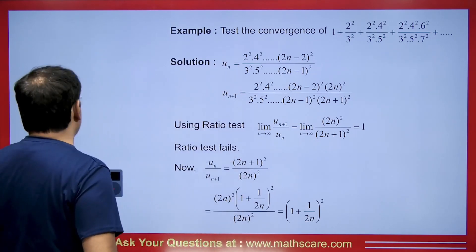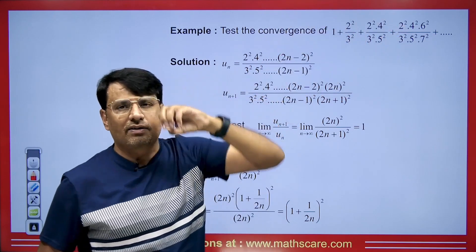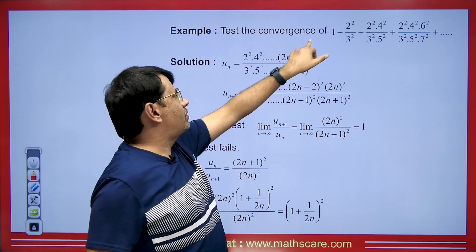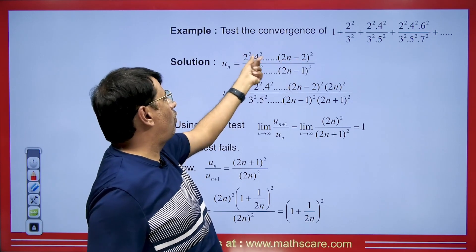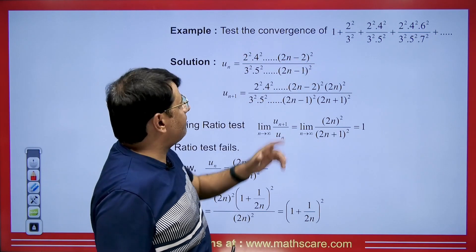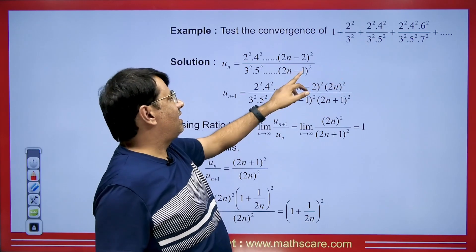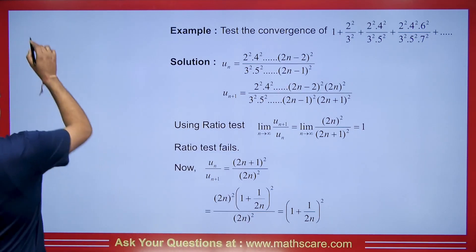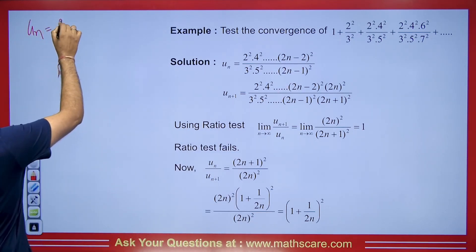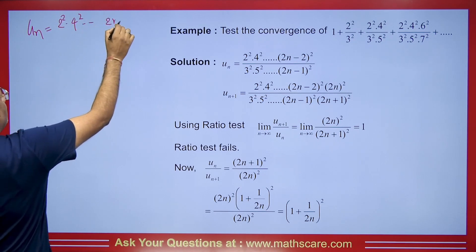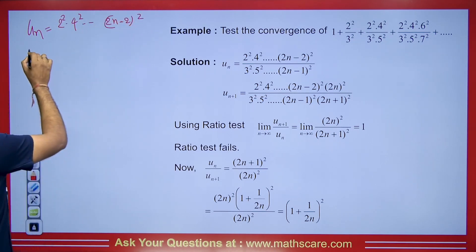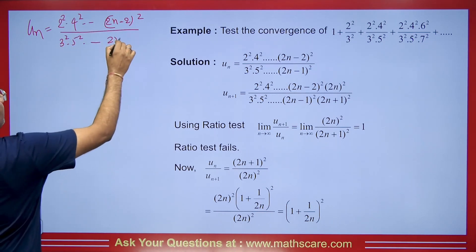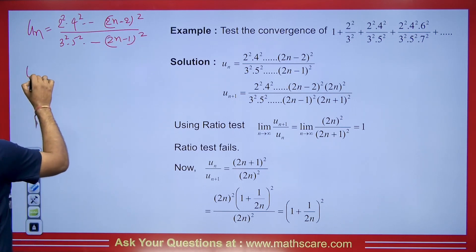Now let's talk about the test for the convergence of this series. The u_n term will be 2, 4, 6 and so on — so the nth term of the numerator will be (2n−2)². The nth term of the denominator will be (2n−1)². For u_{n+1}, the numerator goes 2², 4², ..., (2n−2)², 2n² and the denominator goes 3², 5², ..., (2n−1)², (2n+1)².